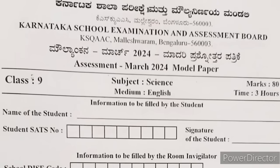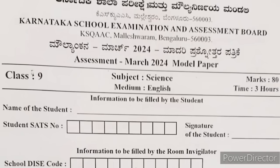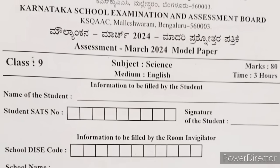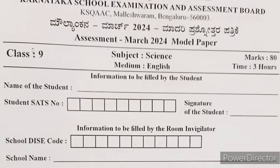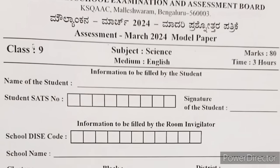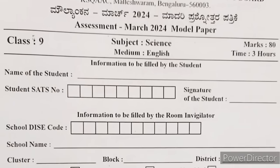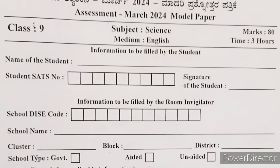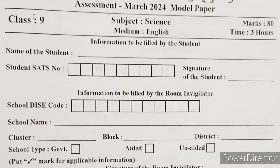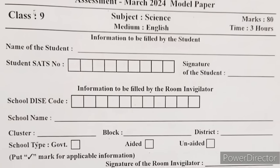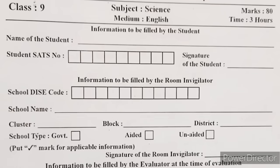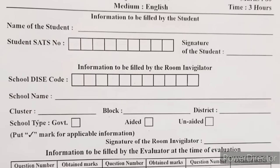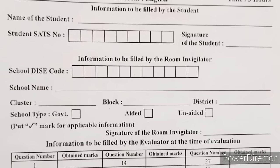Hello everyone. I have here the question paper of class 9 science with key answers released by Karnataka School Examination and Assessment Board. First, we have the information to be filled by the students, that is name of the student, SATS number and signature of the students. The rest of the information will be filled by room invigilation and at the time of the evaluation.